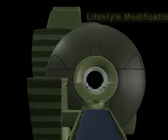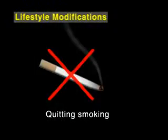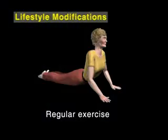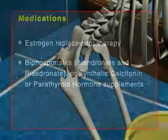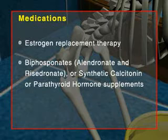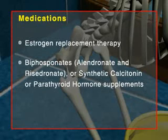Osteoporosis can be treated by changes in lifestyle, like quitting smoking, regular exercise, and a balanced diet, and by taking medications such as estrogen replacement therapy, bisphosphonates, alendronate, and risedronate, or synthetic calcitonin or parathyroid hormone supplements.